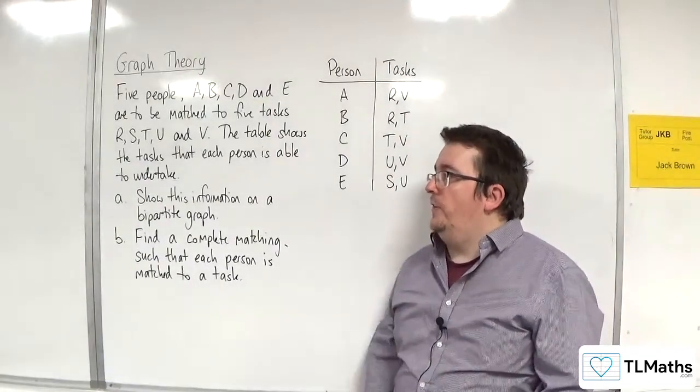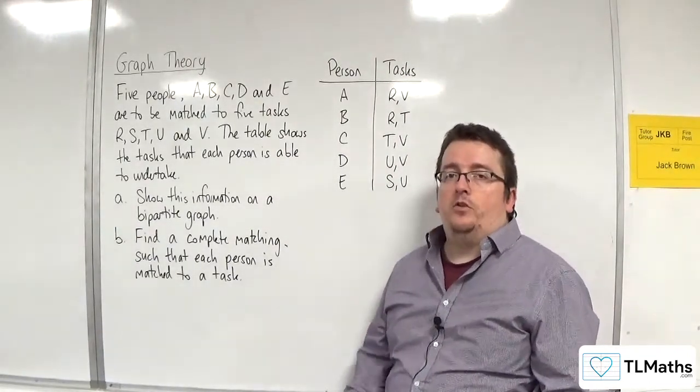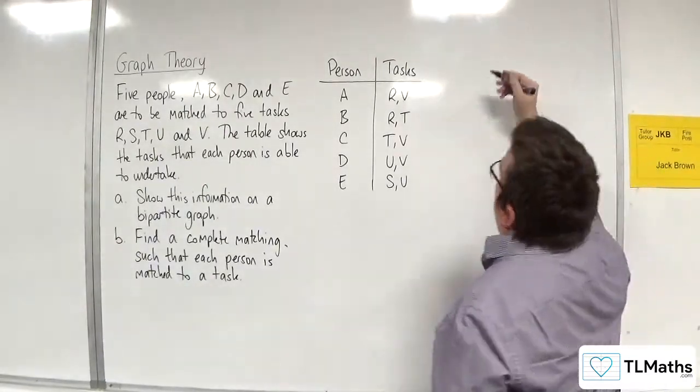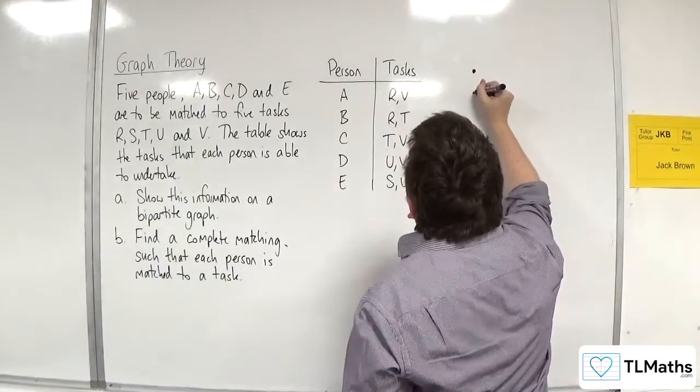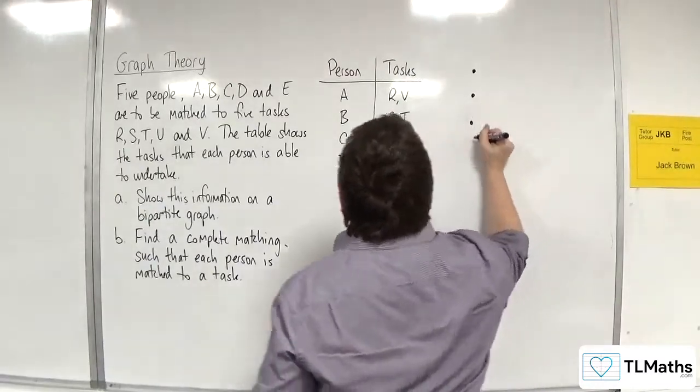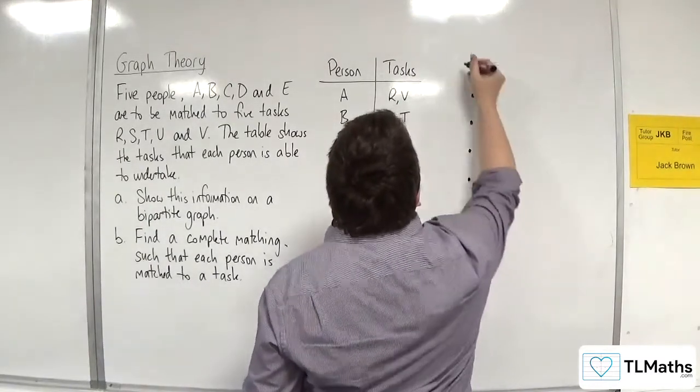Part A, show this information on a bipartite graph. So what we're going to do is have some nodes A, B, C, D, and E, and I'm going to label them.